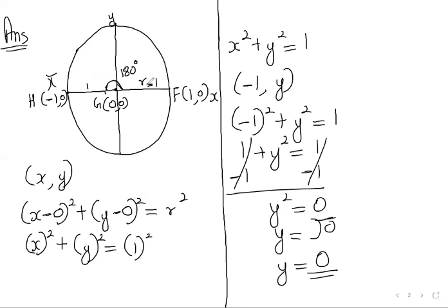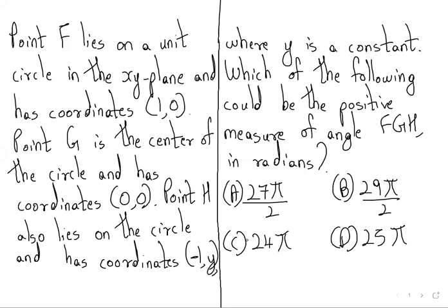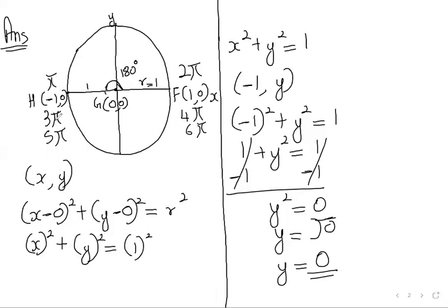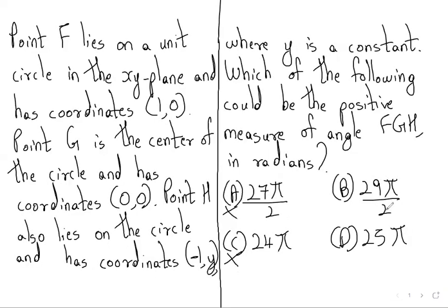Each additional full revolution adds 2π, so from this point back to this point the angles are π, 3π, 5π — all odd multiples of π. If we go the other way, we get 2π, 4π, 6π — even multiples, which are full rotations and don't land at 180°. Looking at the options: 24π is even — wrong. 27π/2 = 13.5π — decimal, wrong. 29π/2 = 14.5π — decimal, wrong. 25π is odd and not a decimal, so it works.